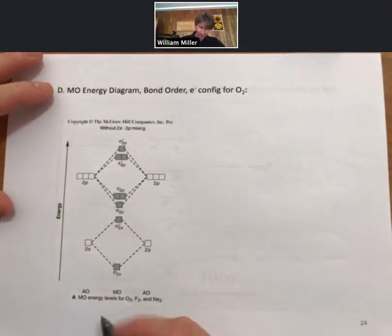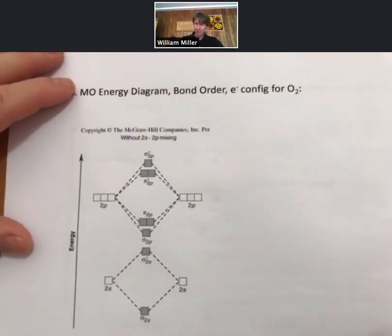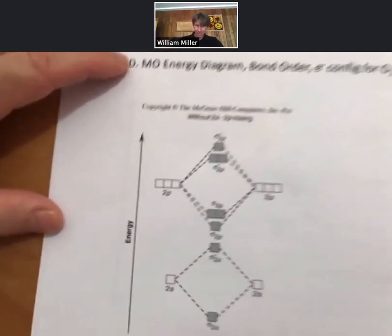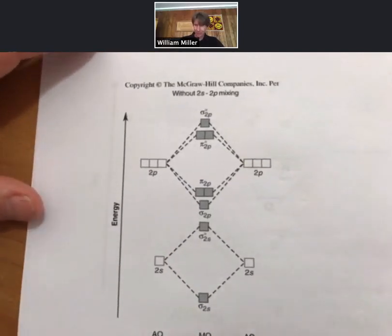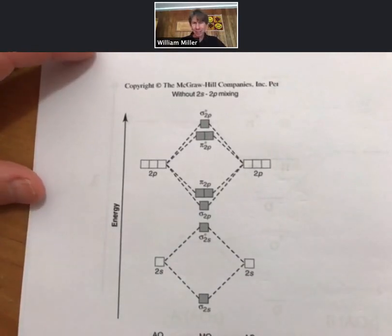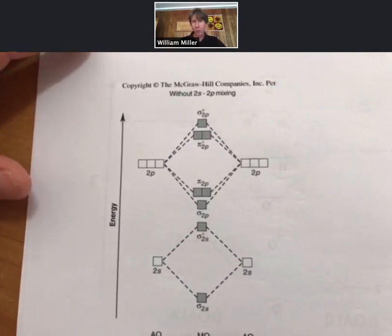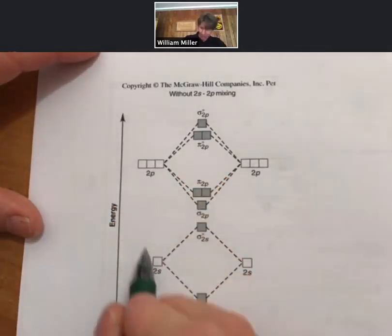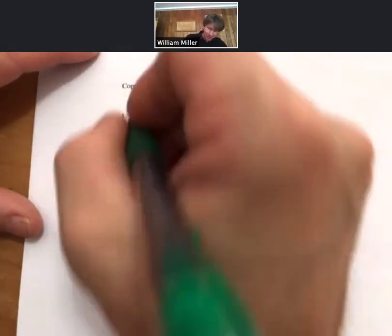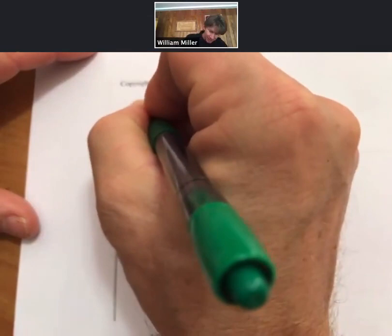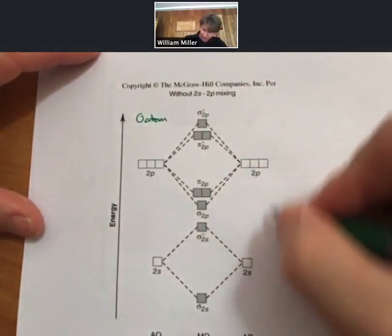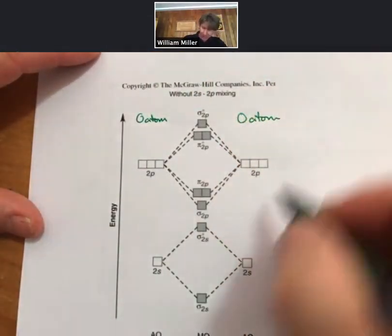Now it's time for one of the pieces of evidence that proved molecular orbital theory was more correct. This is going to be the same molecular orbital energy diagram, bond order, and electron configuration for oxygen O2. I've got a pre-drawn picture here.